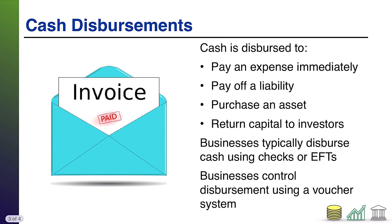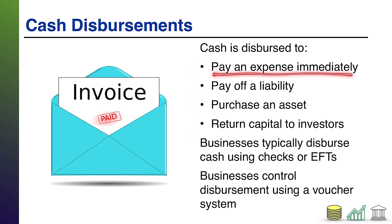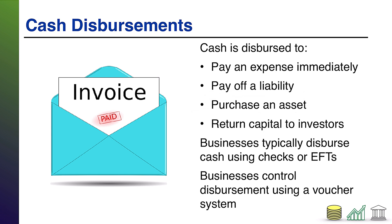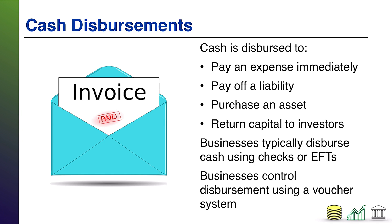Now let's talk about disbursements — the other side of this, where we're the company paying money. There are a handful of reasons companies pay cash: to pay off an expense right when it occurs; to pay off a liability for a prior expense, such as paying an invoice; to purchase some other asset, which is essentially an asset swap since cash is an asset; or to return capital to investors through a cash dividend. Those are the main reasons a company will spend cash, and pretty much anything you can think of fits into one of these categories.